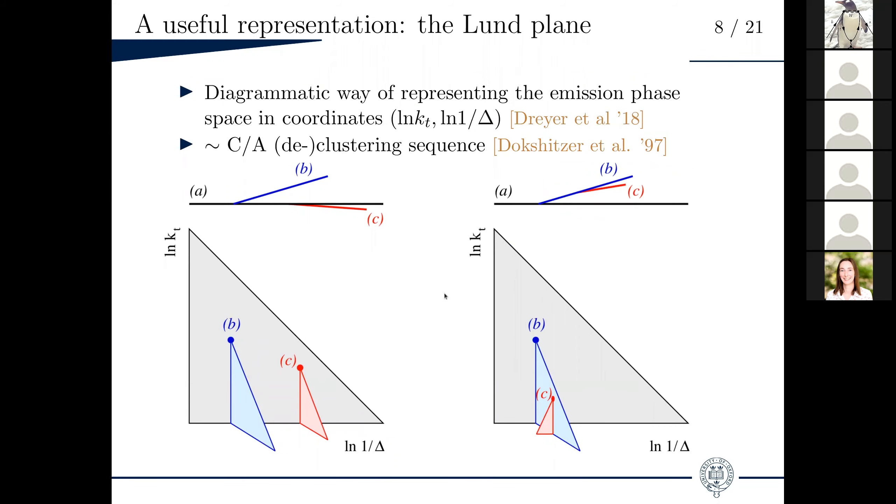These diagrams are very closely related to how the showers operate. They're a way of representing a shower event or basically a way of representing the phase space that is available for potential emissions, which also makes it easier to understand where logarithms come from in the end. We represent the emission structure as a function of two coordinates, which are each associated with a potential source of logarithmic divergence. In this case, we choose the log of a transverse momentum scale here, the log of kT and the log of an opening angle, one over delta. So roughly said, soft emissions are at the bottom of this plane and collinear emissions on the right of this plane.